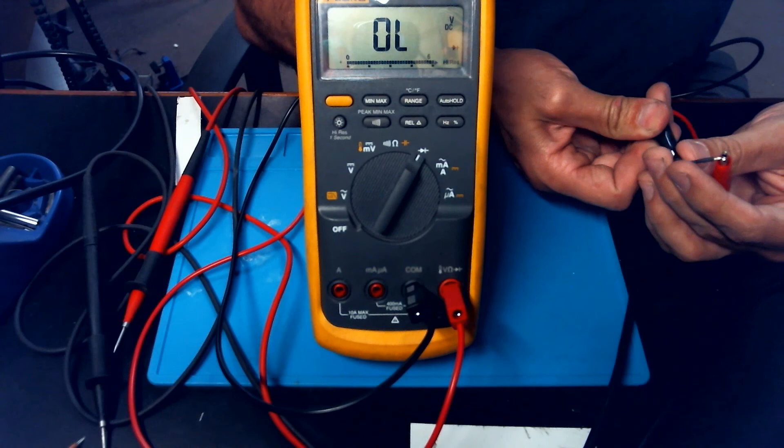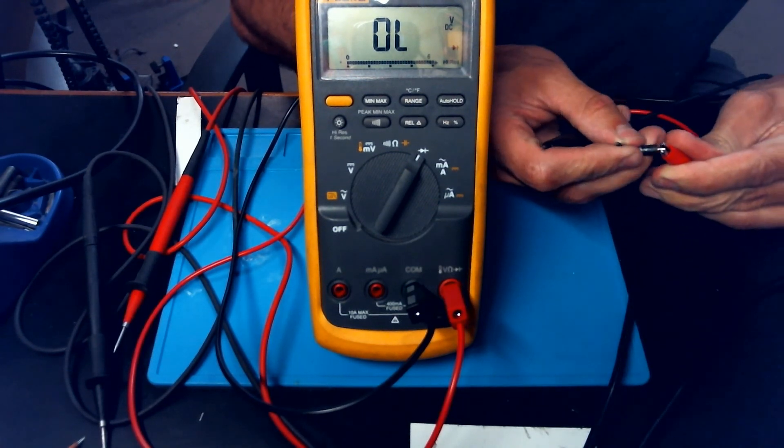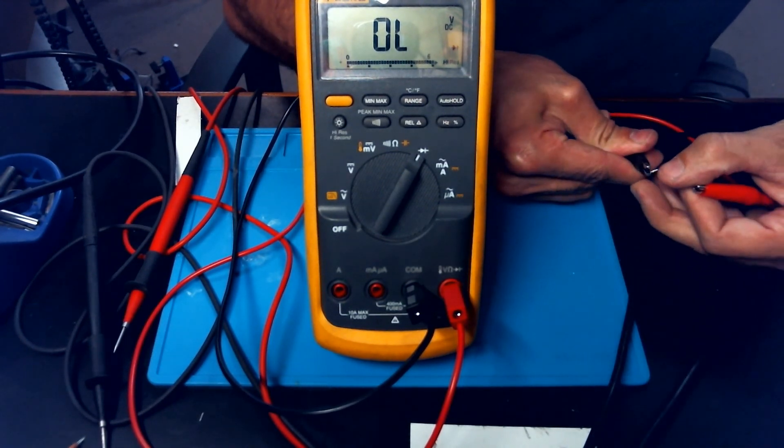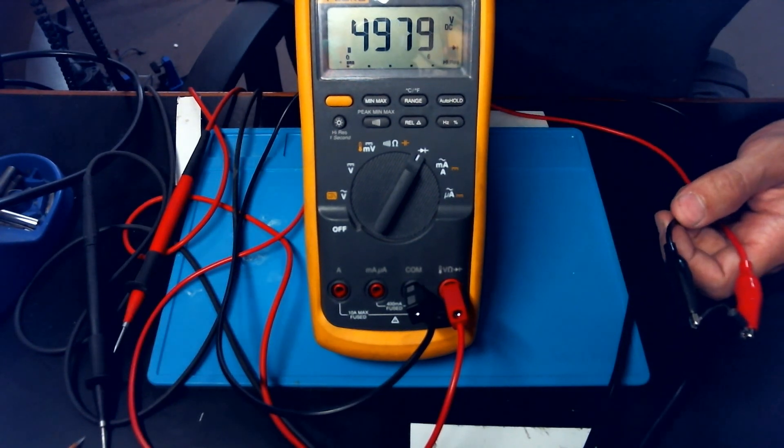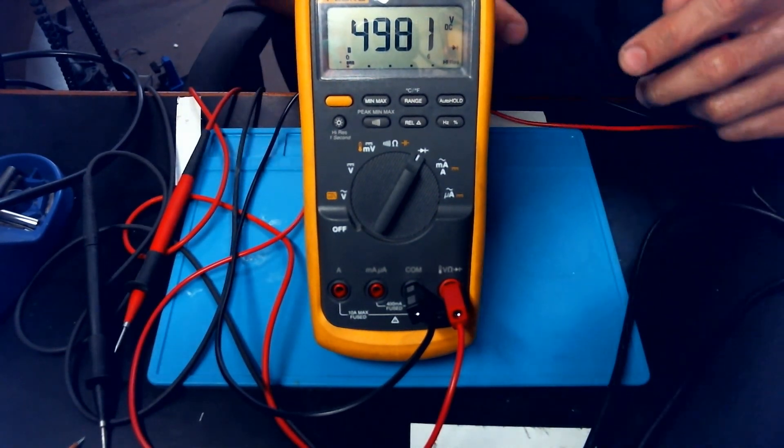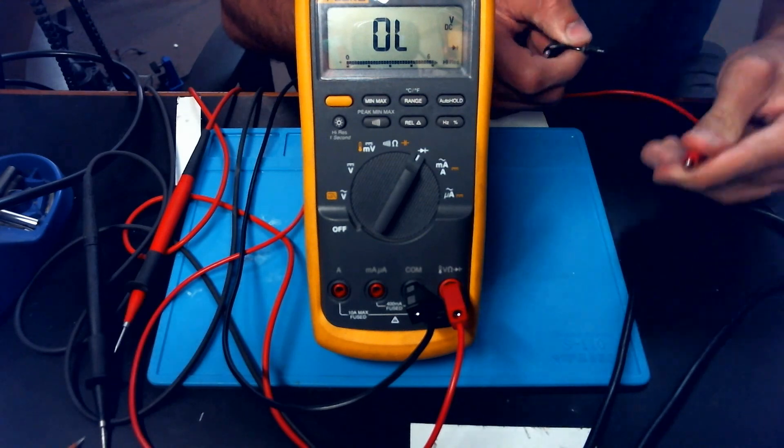Standard diode mode. It's going to be our open side. The closed side. About a half a volt drop, which is what we expect to see out of one of these diodes.